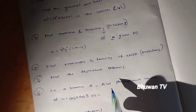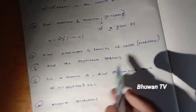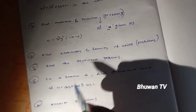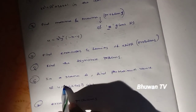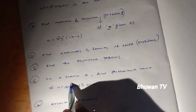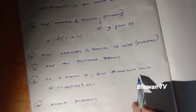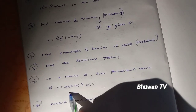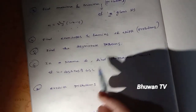Find envelopes of family of ellipses problems. Find asymptote problems. In a plane triangle, find the maximum value of u equals cos A cos B cos C.